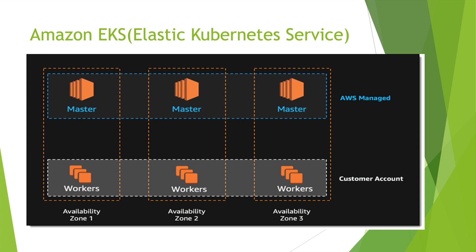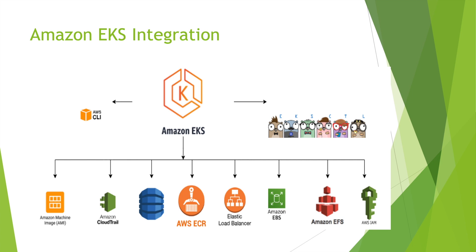EKS takes care of the master node in high availability. It manages highly available etcd, API server, CoreDNS, scheduler, controller manager, and cloud controller. With EKS we just need to deploy our worker nodes and our applications. Authentication is handled using AWS IAM. On top of those benefits, EKS gives you deep integration with AWS — container images in ECR, elastic load balancers, Amazon EFS, Amazon EBS, IAM authentication, and auditing of API calls in CloudTrail.